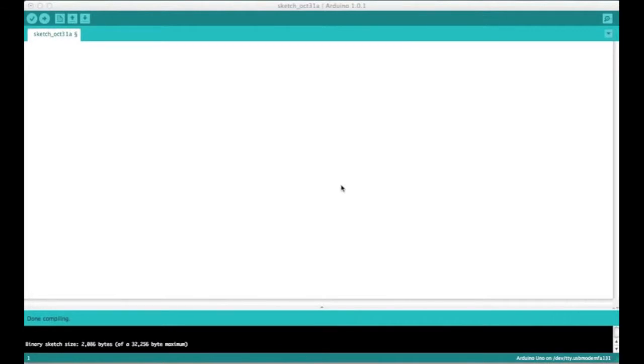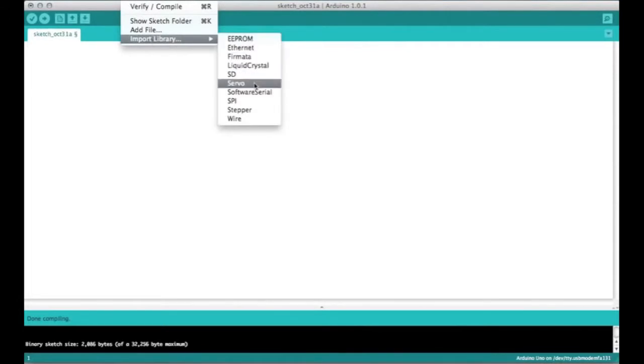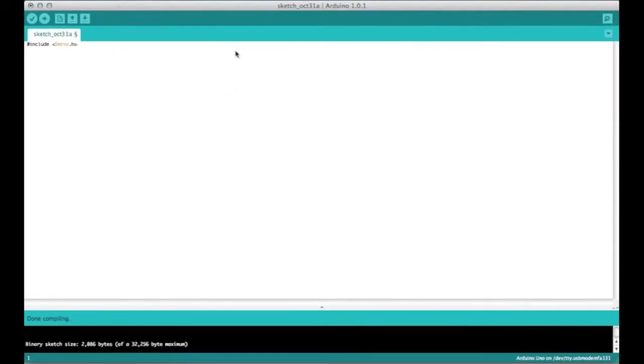The first thing we need to do is include the Arduino servo library. We'll go under sketch, import library, servo. Then we want to create a servo object. We'll call it myservo. And we go to the setup section of the code. And we have to attach it to a pin. So, myservo.attach, and that's pin 9. That's what we're connected to. It's a PWM pin.